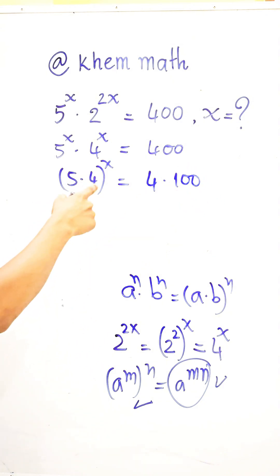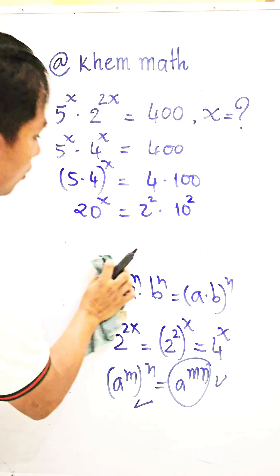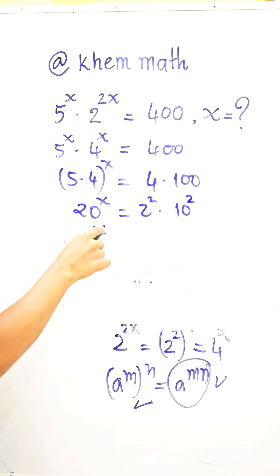And 5 times 4 is equal to 20 all power x is equal to, we write 4 as 2 squared and 100 as 10 squared. And also we use the formula. We get this is equal to 20 power x is equal to 2 times 10 all squared.